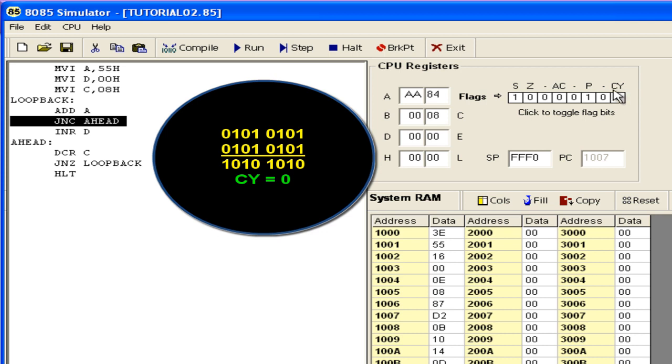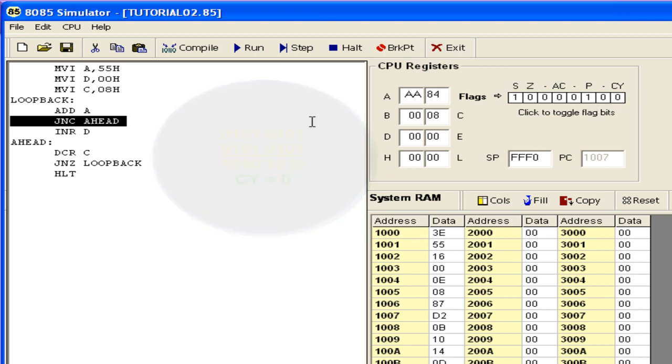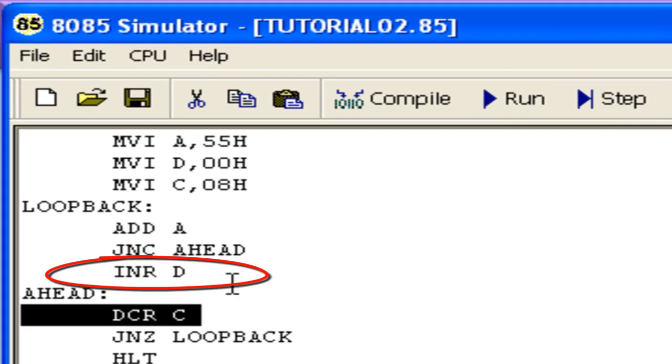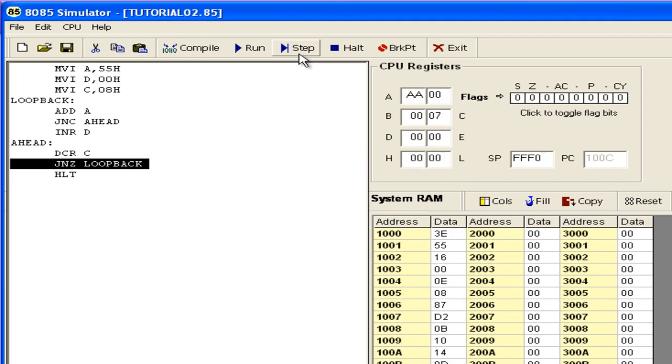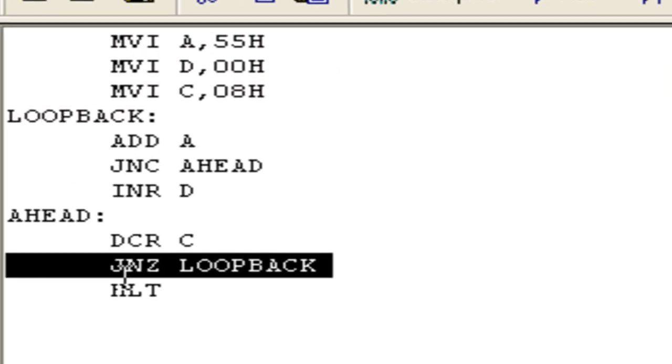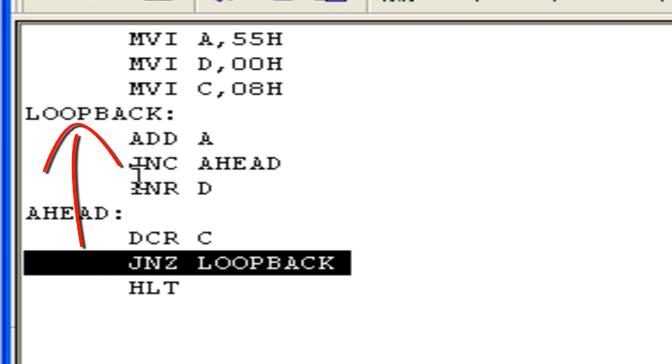Add A to itself. This is important, the carry flag. Based on this, the jump instruction will act. And since the value is 0, it will jump to ahead. So the increment D instruction over here has been skipped. You are decrementing the value of C. So step ahead.